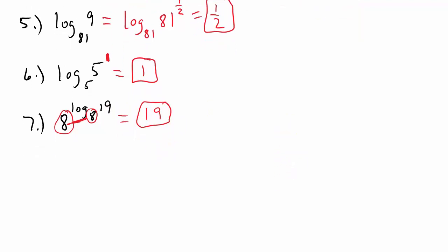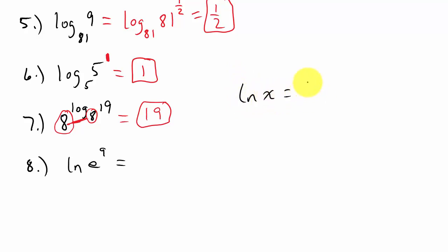Let's add a couple more. Number 8: the natural log of e to the ninth. Remember, the natural log of x is the same as log base e of x — it's understood to be base e. So since the base e is the same as the base of this exponential term, my answer is my exponent, which is 9.